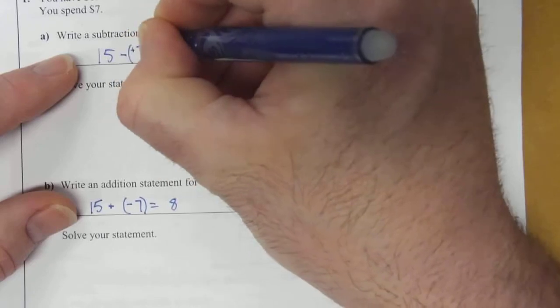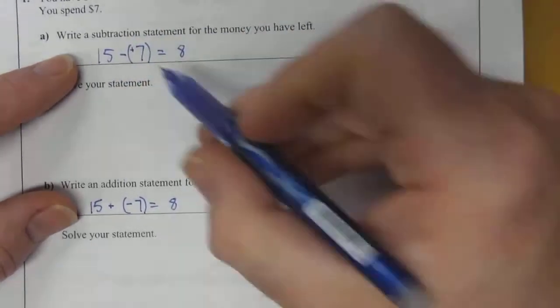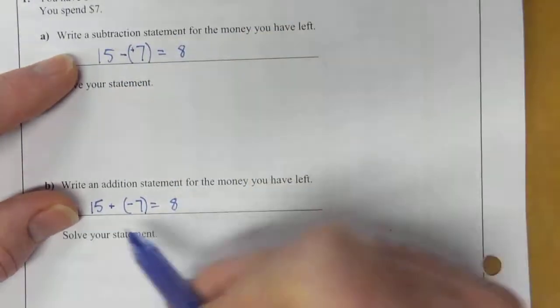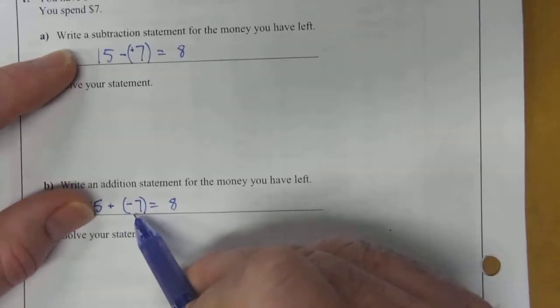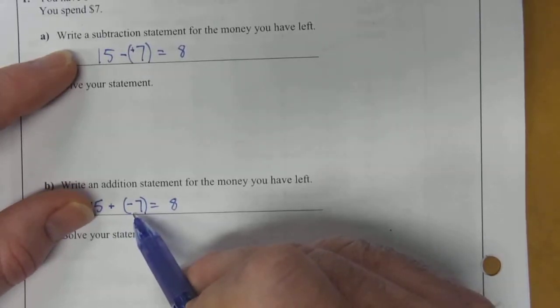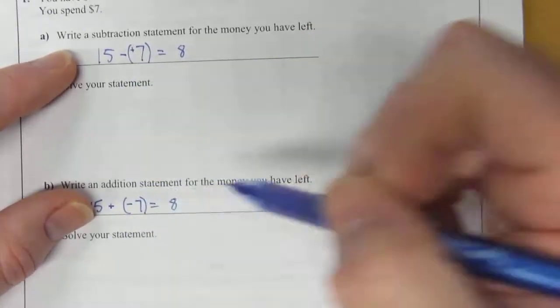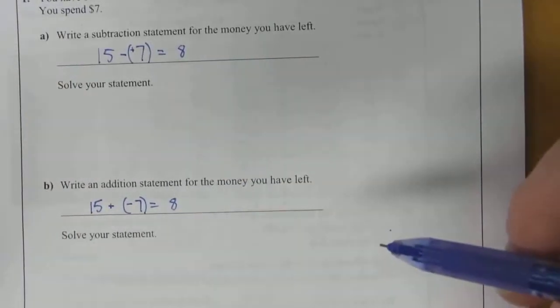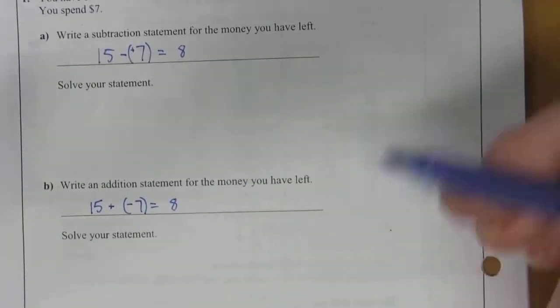If I change this to a positive 7, you know that subtracting a positive is the same as adding a negative. So either of those can be used to get you the same result, and that's all there is to it.